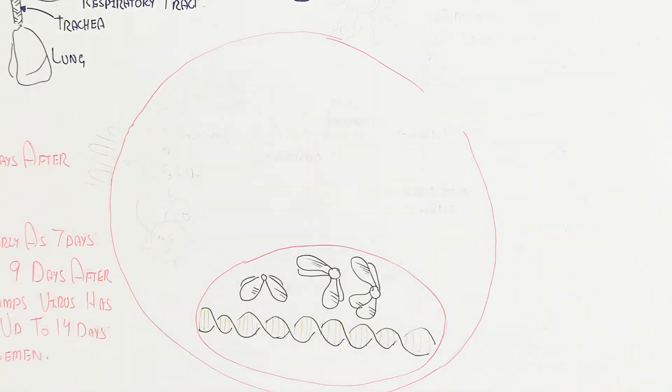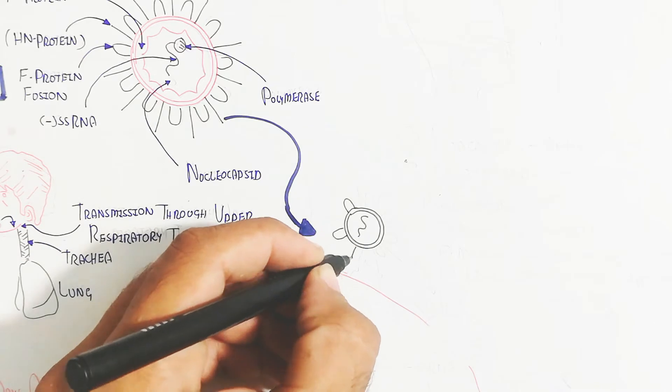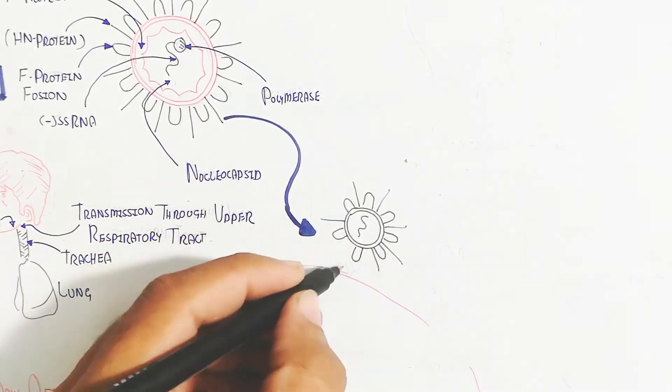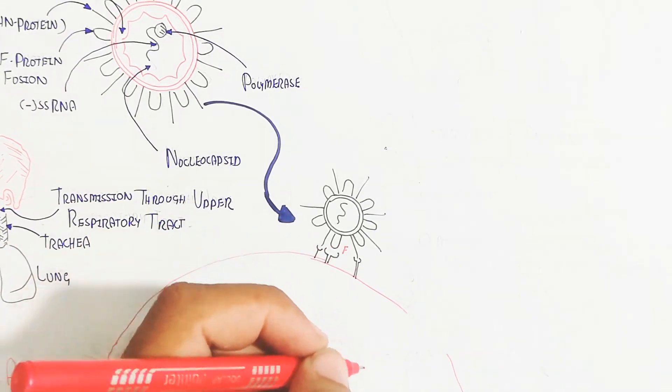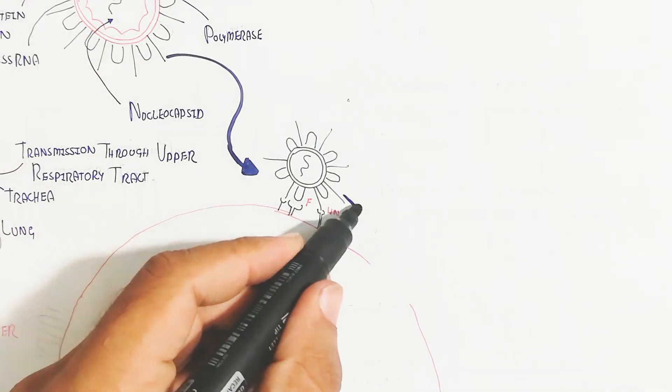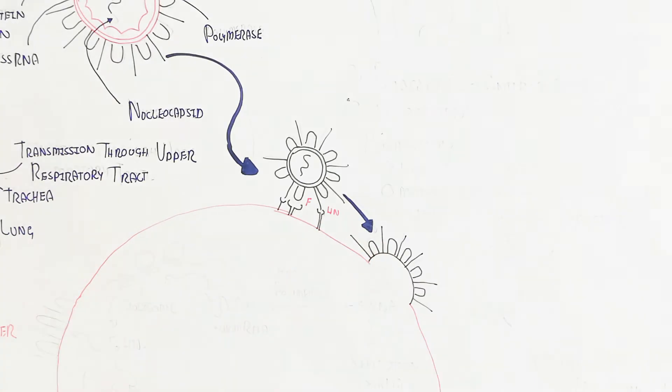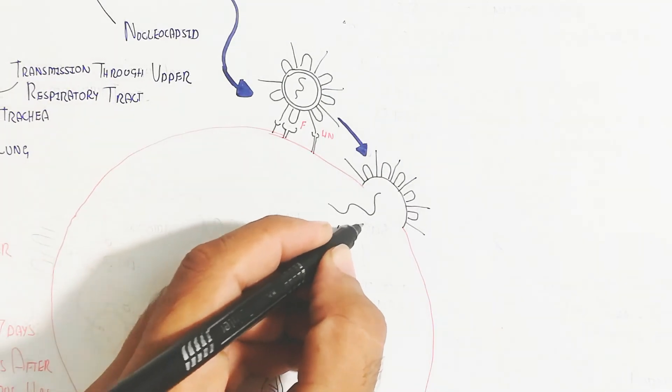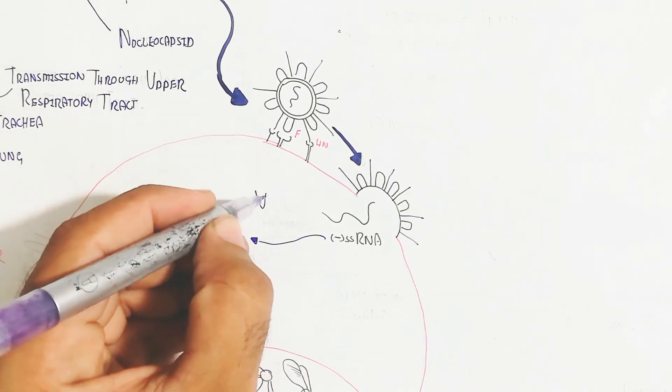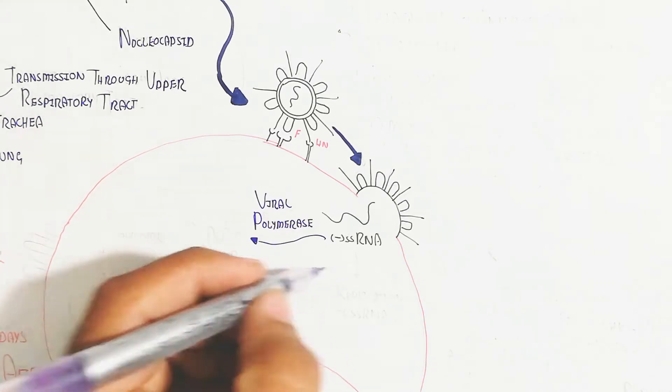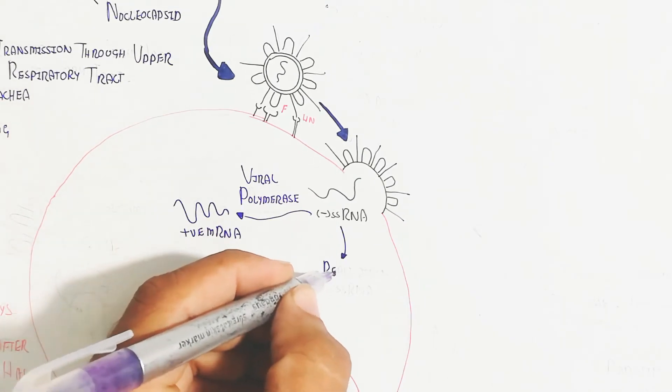This is the cell which contains DNA called chromosome. The virus when it arrives contains F receptor and H receptor, will bind and lead to fusion with the plasma membrane of the cell of the upper respiratory tract. Moving inside, the negative single-stranded RNA will lead to viral polymerase. Positive messenger RNA will produce viral polymerase enzyme and replication also of the negative single-stranded RNA.